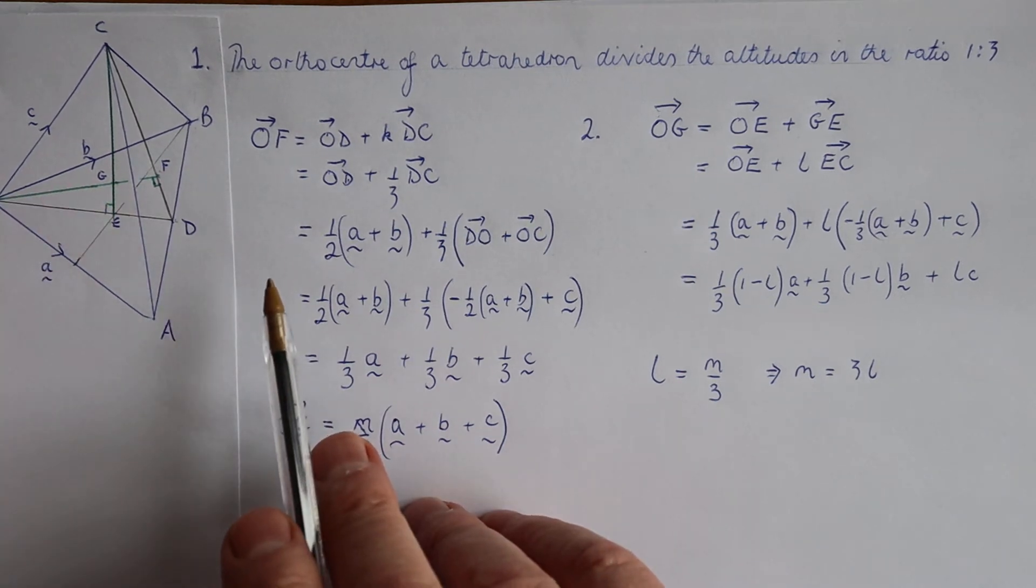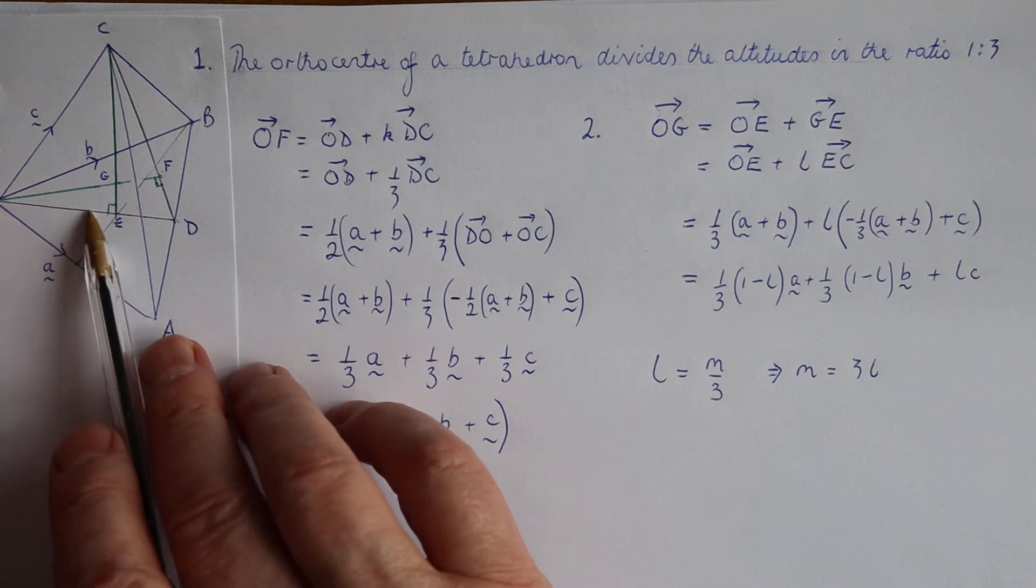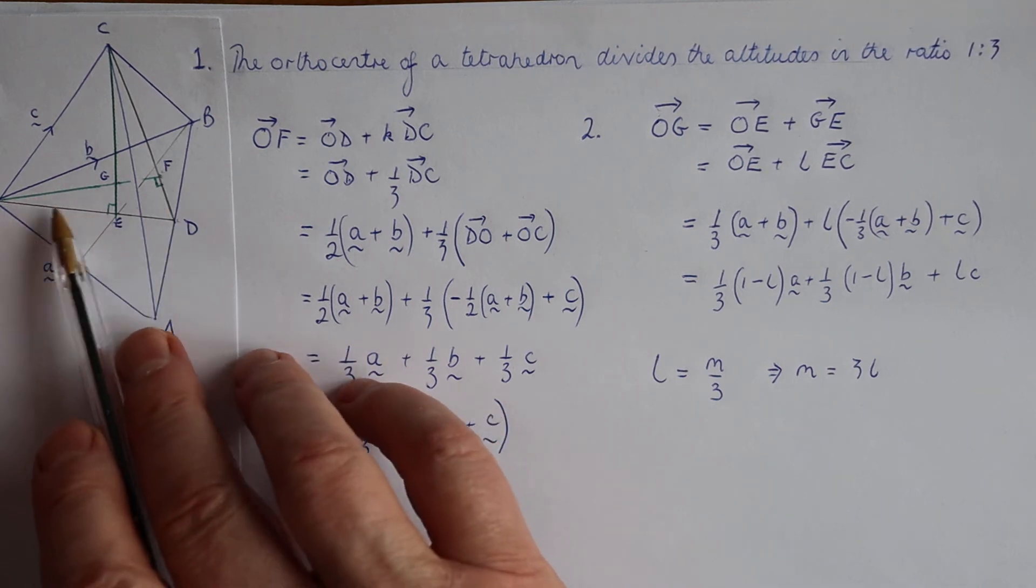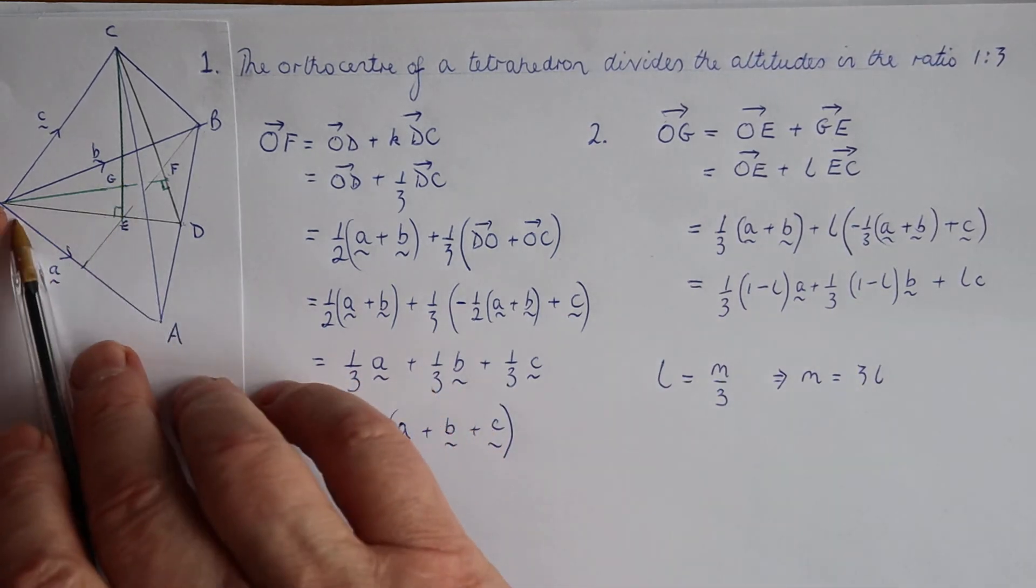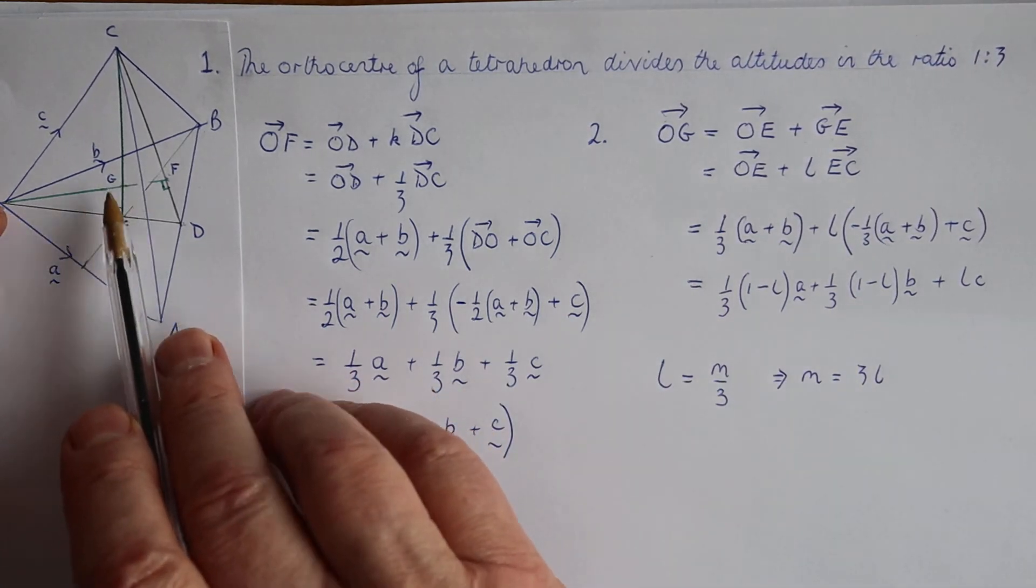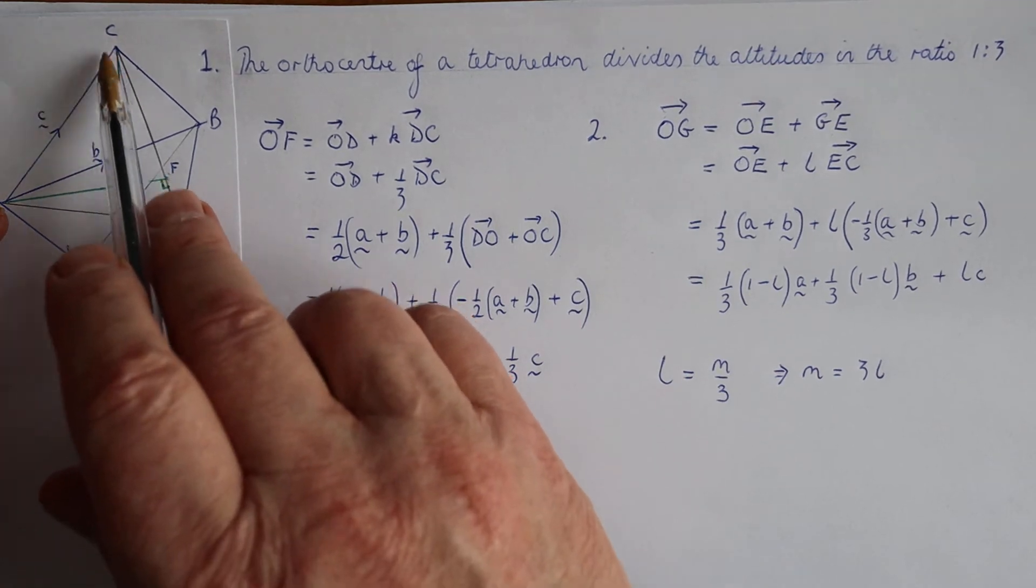But now we're going to find OG by another route, and we're going to say that OG is equal to OE plus GE, that plus that. EG is some fraction of that altitude, EC.